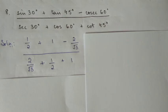We substitute these values into the question: 1 by 2 plus 1 minus 2 by root 3 in the numerator. For the denominator it's 2 by root 3 plus 1 by 2 plus 1.